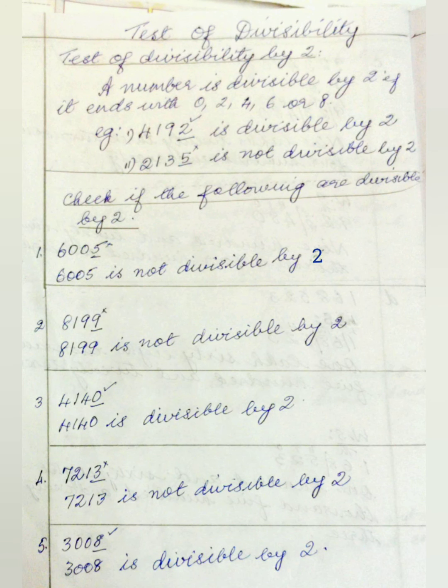The next chapter we are going to see is the Test of Divisibility. Test of Divisibility by 2: a number is divisible by 2 if it ends with 0, 2, 4, 6, or 8.